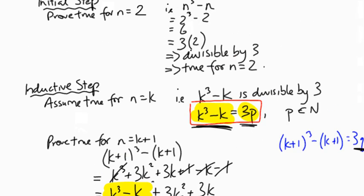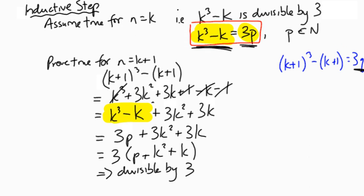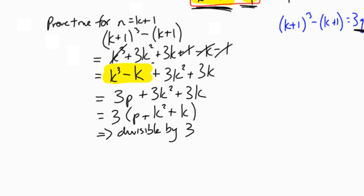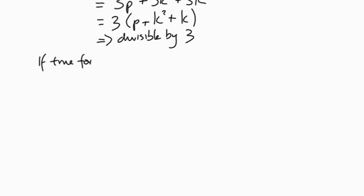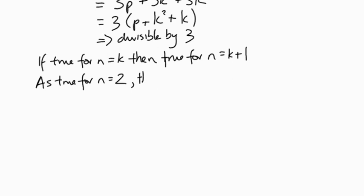So therefore, what we've shown is that if k³ - k is divisible by 3, then (k+1)³ - (k+1) is also divisible by 3. We've shown that the next term up is actually true. So in other words, if true for n equals k, then we've shown that it's true for n equals k plus 1. So there's your dominoes. Because we have as true for n equals 2 in this case, and true by induction for all n, n greater or equal to 2.